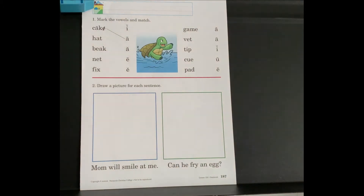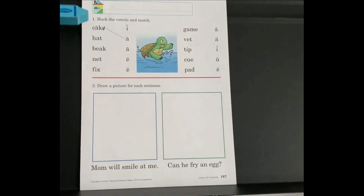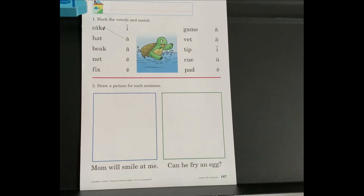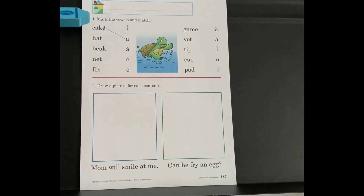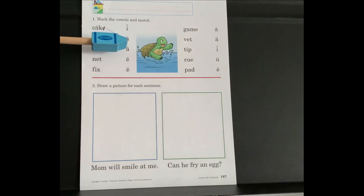Begin by writing your name. Number one, mark the vowels and match. The first word was done for you as an example. Look at the word — there are two vowels in this word. What is the two vowel rule? When there are two vowels in a word, the first vowel says its long sound and the second is silent. So in this first word, A says its long sound and E is silent. A says its long sound, which is A. A line was drawn from the word cake to the long A. You are going to do that for all of the words.